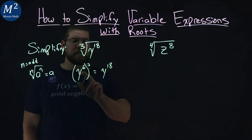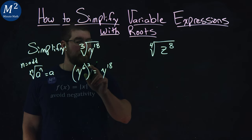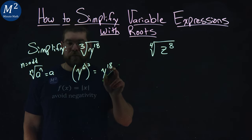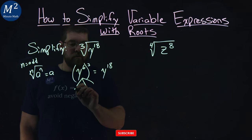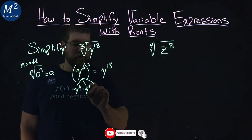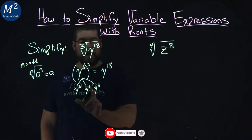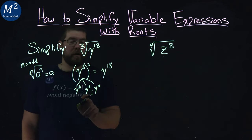Y to the sixth, remember our exponent rules, we multiply the exponents to simplify, 6 times 3 is 18. So really, we have three pairs of y to the sixth power going on here. So we can kind of see that as a factor tree going on here.